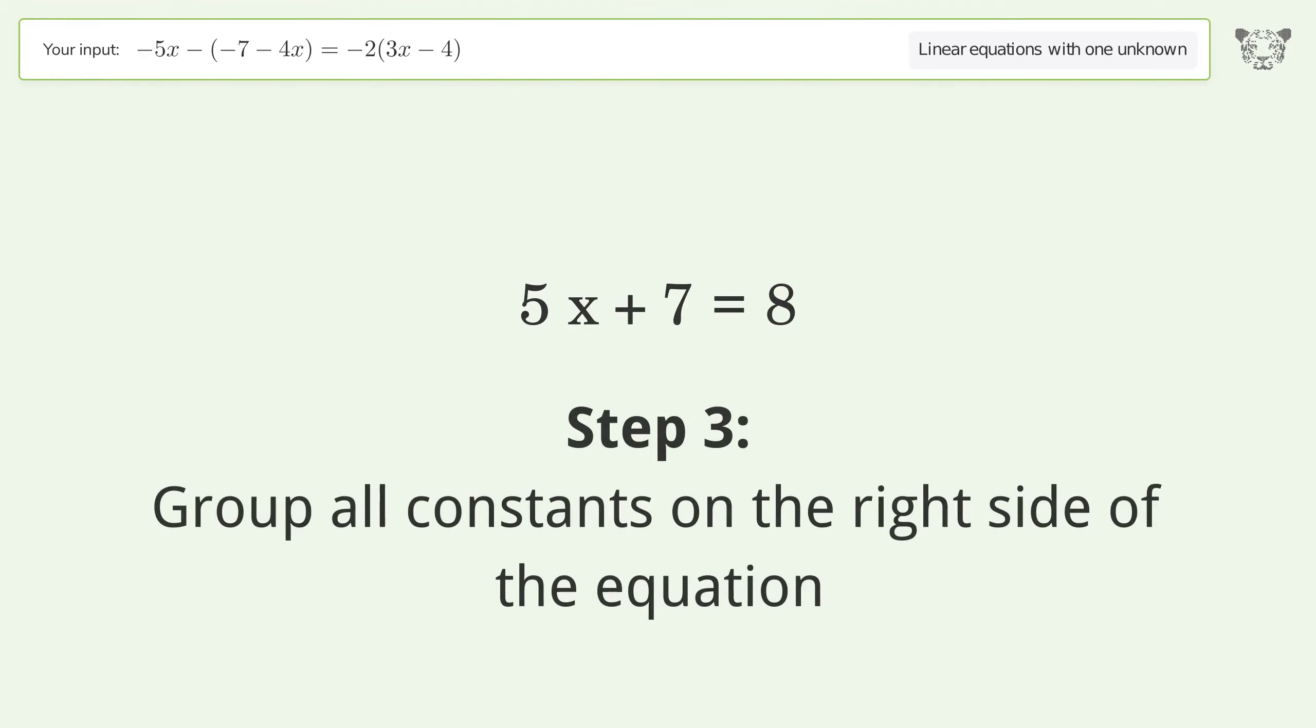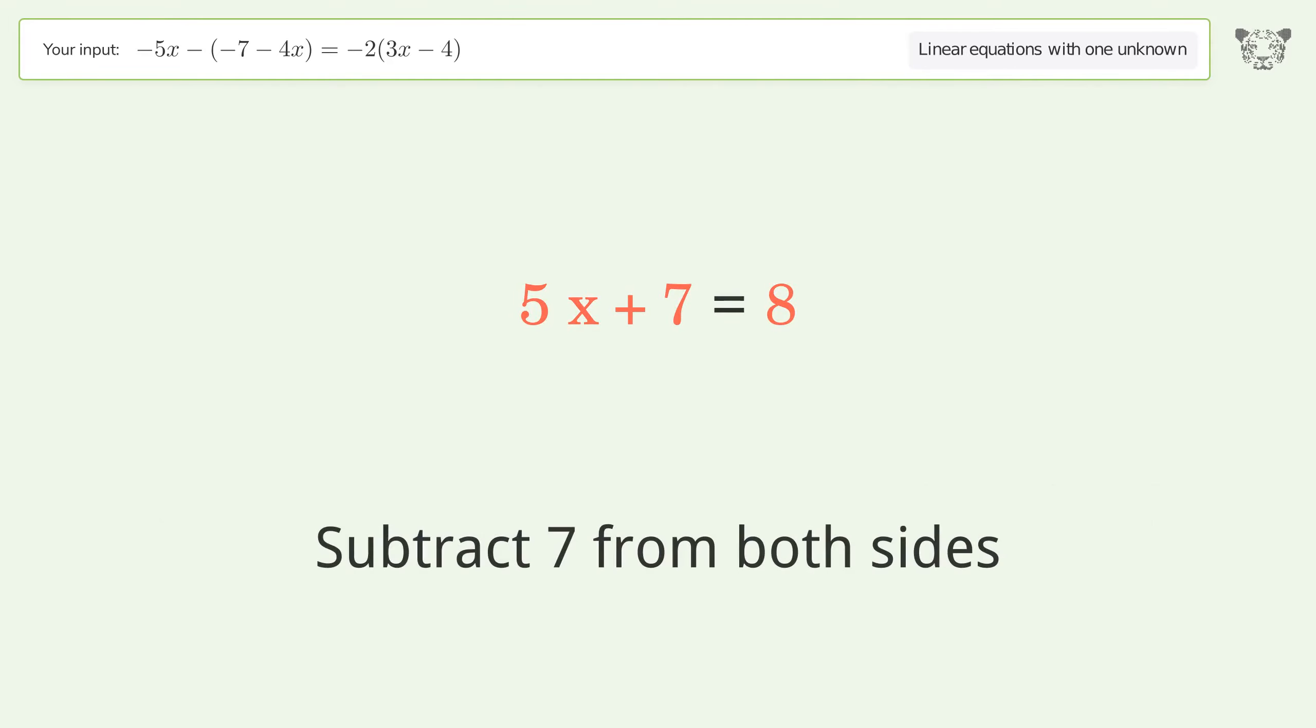Group all constants on the right side of the equation. Subtract 7 from both sides and simplify the arithmetic.